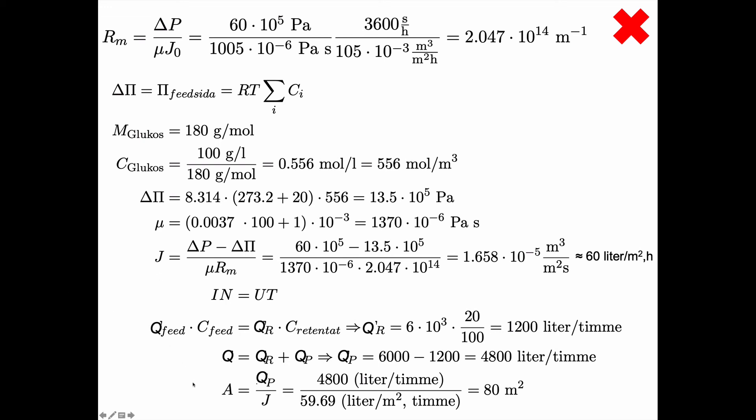Now what comes in as liquid must go out so what comes in in the feed must be what comes out as the retentate and the permeate. So the permeate must be 6000 minus 1200 so 4800 liters per hour.